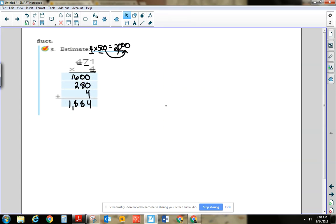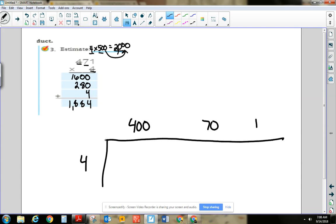Okay. So with this problem, I would have 400. So 70 and 1. I'm going to multiply. It's going to be 4 times. So I'm going to separate out. 4 times 4 is 16, move to two zeros.